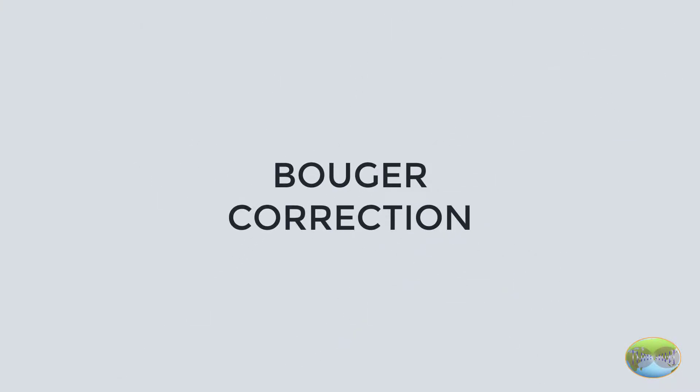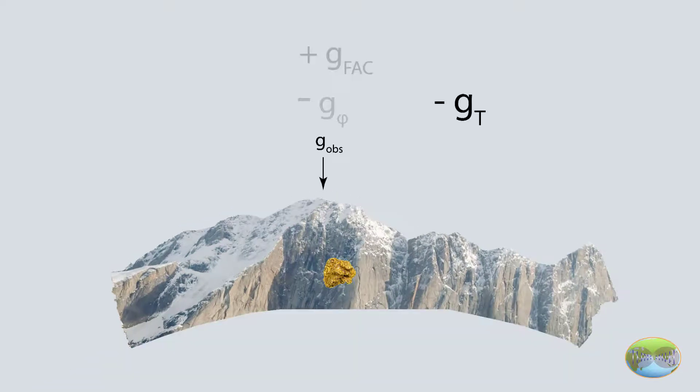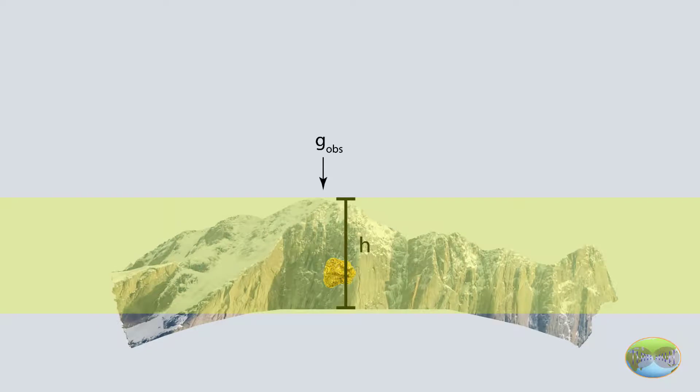The last and most important one is Bouguer correction. Till now, we have removed the field due to earth and its effect in free air up to a certain height. Now, what remains is the topography above mean sea level. This is removed by assuming an infinite slab of thickness that equals the height above sea level and having a density of country rock.